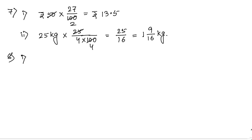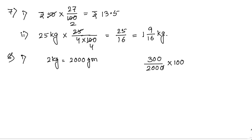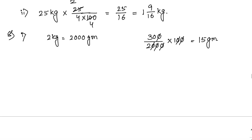Sum number 8: what percent is 300 grams of 2 kg? First convert 2 kg to 2000 grams. Then write 300 by 2000 into 100. Cancelling zeros gives 15. So the answer is 15 percent.